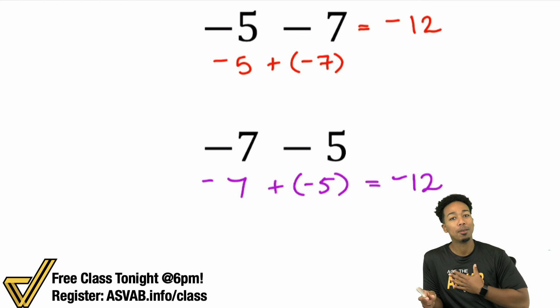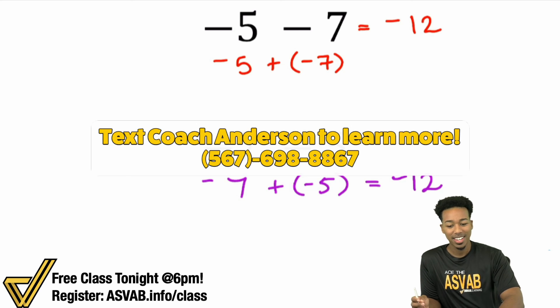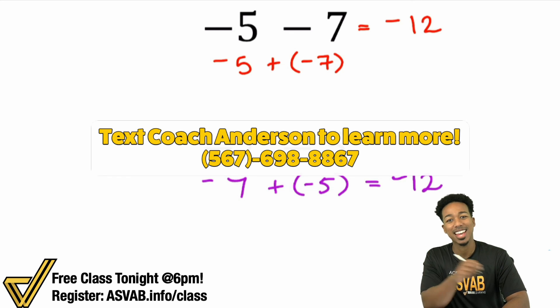I'm always happy to help you out. I'm Anderson, your ASVAB coach, and I'll see you there. Let's get to it and let's have fun. And by the way, if you need my phone number, let me go ahead and throw my phone number right over here. Here is my phone number. If you have any questions about this, 567-698-8867. I'll see you there, my party people. Let's have some fun and let's taste the ASVAB.